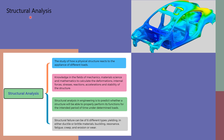In the previous slide we discussed the various finite element analysis types. Now let's deep dive into structural analysis. Structural analysis is understanding how a physical structure will react to the application of different loads. One should have knowledge in mechanics, material science, and mathematics to calculate deformation levels, internal forces, stresses, reactions, and accelerations, as well as the stability of structures. Structural failure can occur in six different types: yielding in ductile or brittle materials, buckling, resonance, fatigue, creep, and erosion or wear.